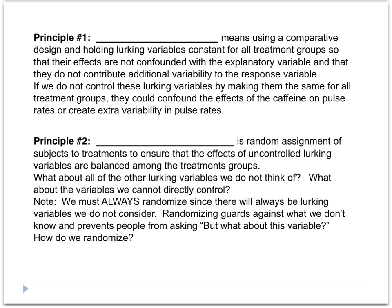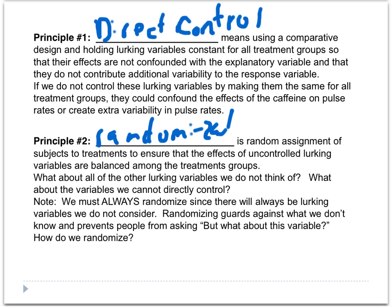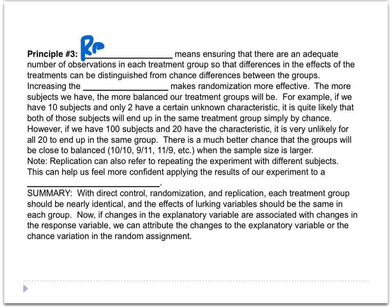There are three principles of good experimental design. The first is direct control — we control for all lurking variables as much as possible by balancing them between the two groups. The second principle is randomization — that's how we balance them out. If we use randomization, we balance out those lurking variables, including ones we're not even aware of. The third principle is replication — the idea that we have a large enough sample so that we can make a conclusion about the whole population.